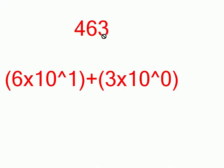Before we understand bits and bytes, we need to first understand how our number system works. Our number system is a base 10 system. Any number can be represented by combining digits in our system. To make the number 463, the 3 represents the ones spot, the 6 represents the tens spot, and the 4 represents the hundreds spot — all factors of 10.